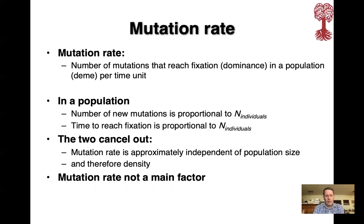In a population, the number of new mutations is proportional to the number of individuals. But the time to reach fixation is also proportional to the number of individuals. So the two cancel out — mutation rate is approximately independent of population size and therefore density. So mutation rate as such is not a main factor to consider.